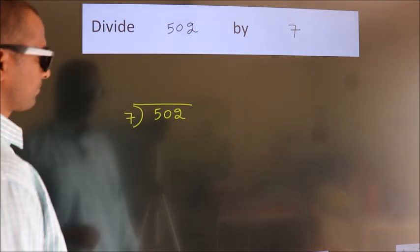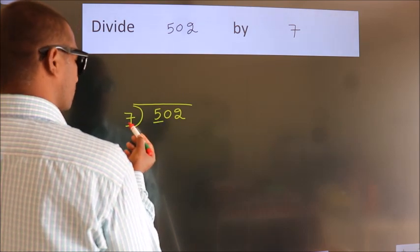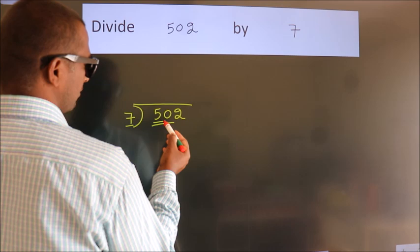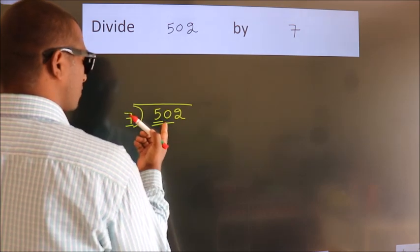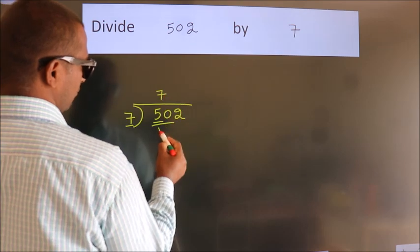Next, here we have 5. Here 7. 5 is smaller than 7, so we should take two numbers: 50. A number close to 50 in the 7 table is 7 times 7, which is 49.